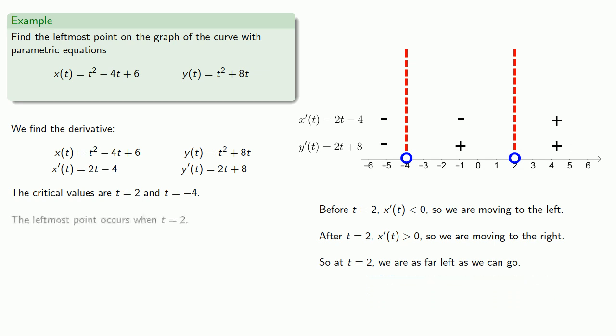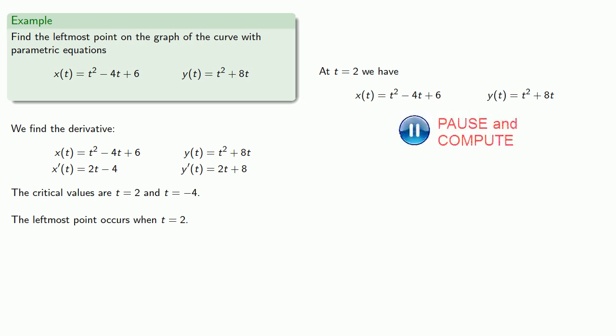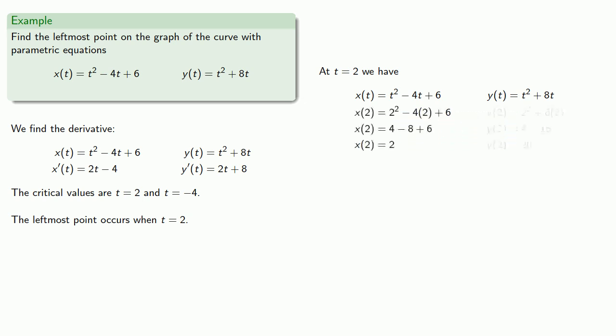So if we're moving left until we hit t equals 2 and then move right, that means at t equals 2 we are as far left as we can go. The leftmost point occurs at t equals 2, and we find the coordinates of that point by evaluating the parametric equations at t equals 2.